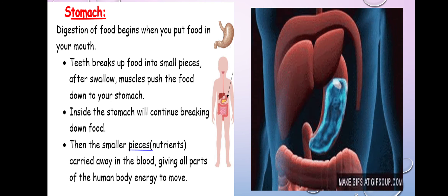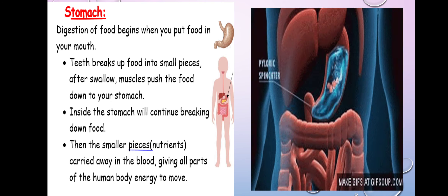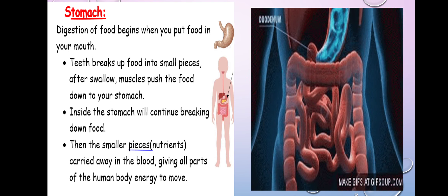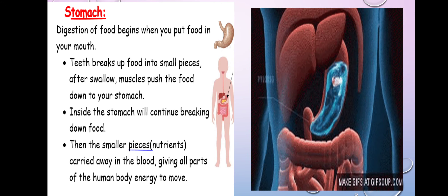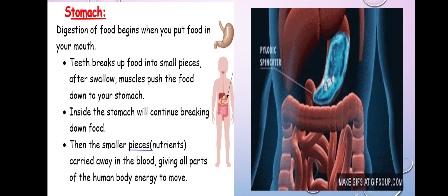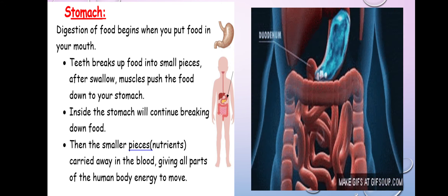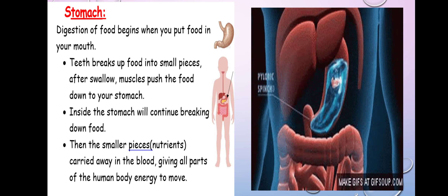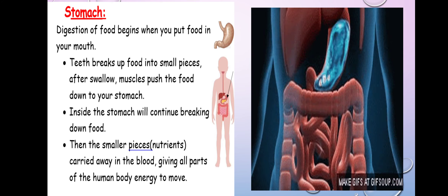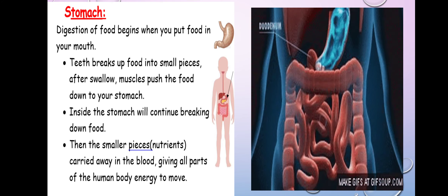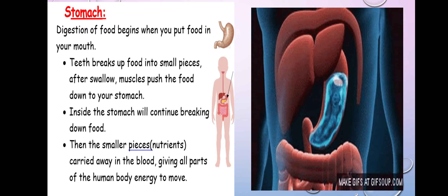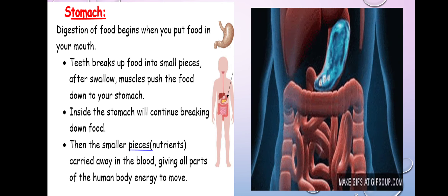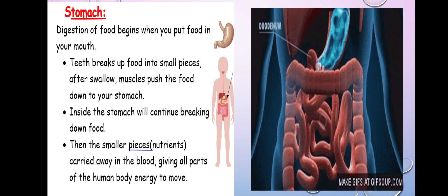Those smaller pieces, we can call them nutrients — like what we took in food groups. You remember? Carbohydrates, proteins, fats, vitamins — all those are nutrients. That's what the stomach does: it extracts those nutrients so our body can get benefits. Then the blood will carry those nutrients to all parts of our body.